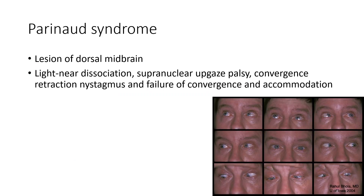Next is Parinaud syndrome. In this case there is a lesion of the dorsal midbrain. It is characterized by light-near dissociation, supranuclear upgaze palsy, convergence-retraction nystagmus, and failure of convergence and accommodation. Nine-gaze images show supranuclear upgaze palsy.